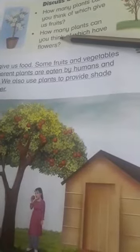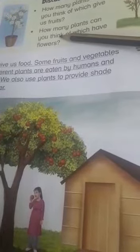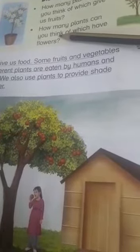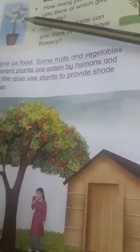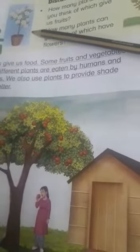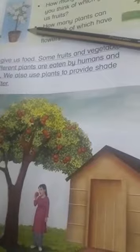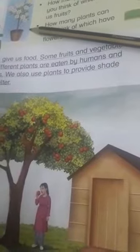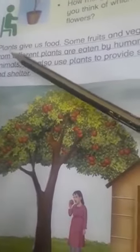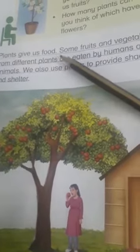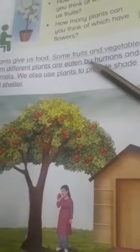Some plants that have flowers: rose plant have flowers, sunflower plant have flowers, lily plant have flowers, and jasmine plant have flowers.